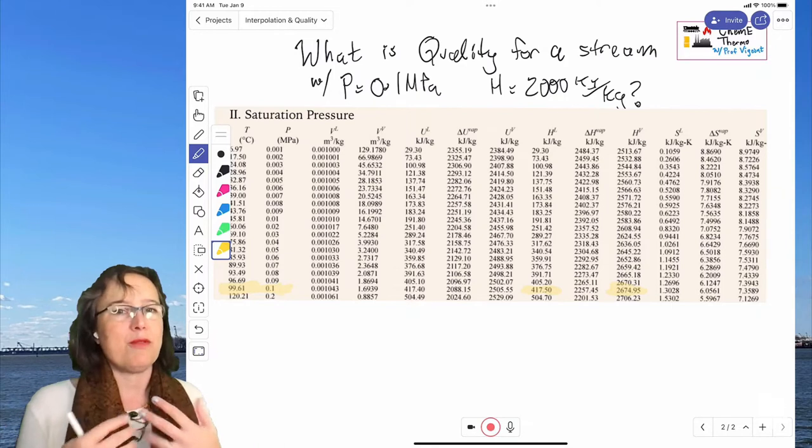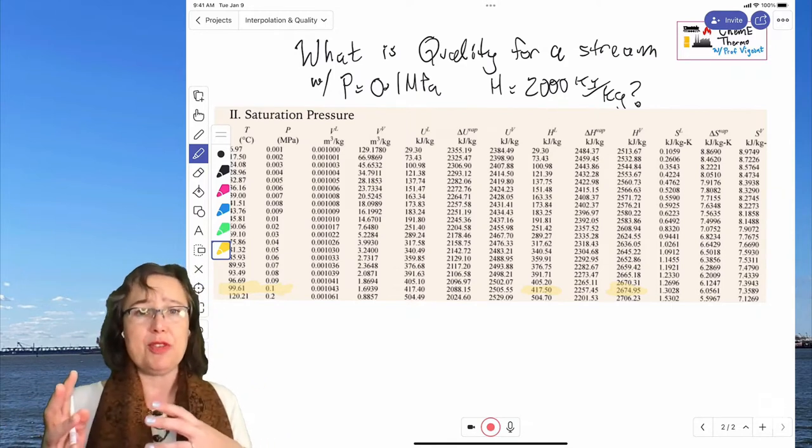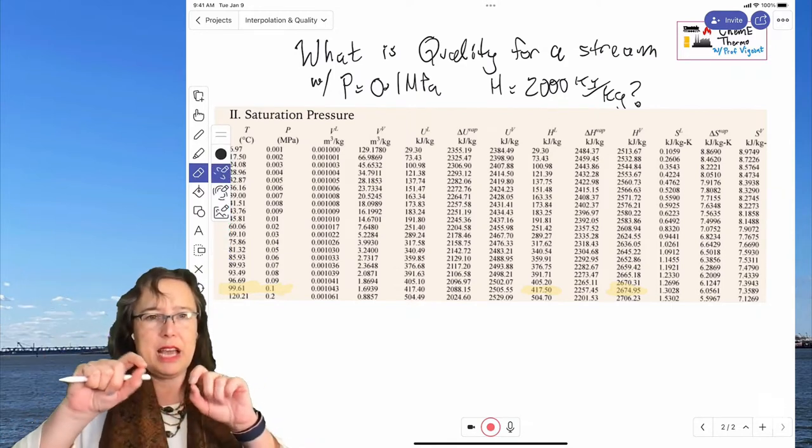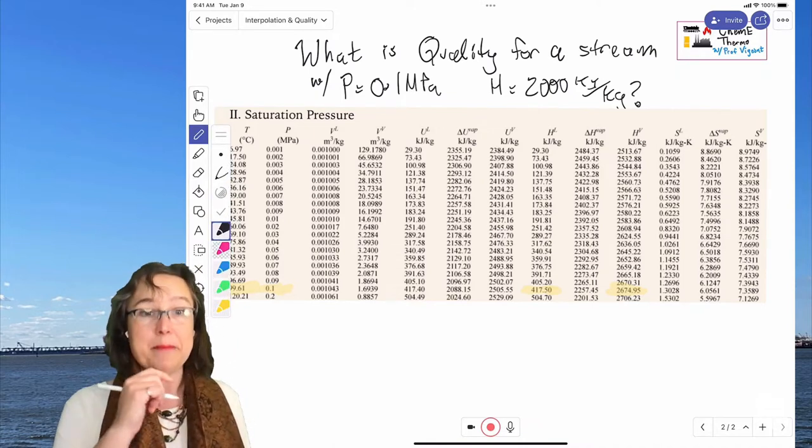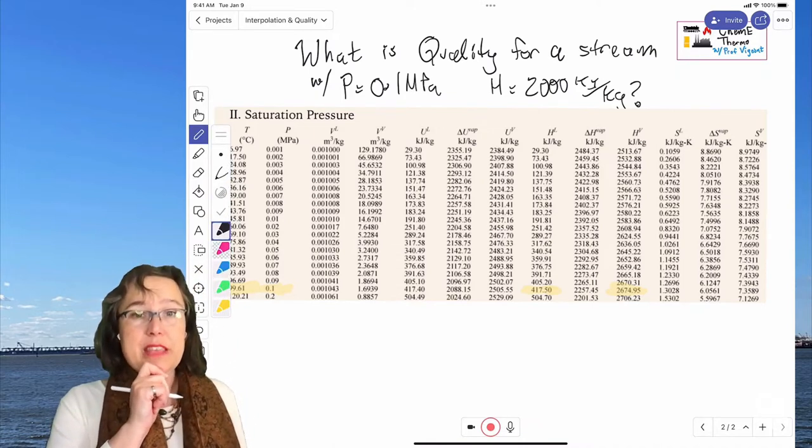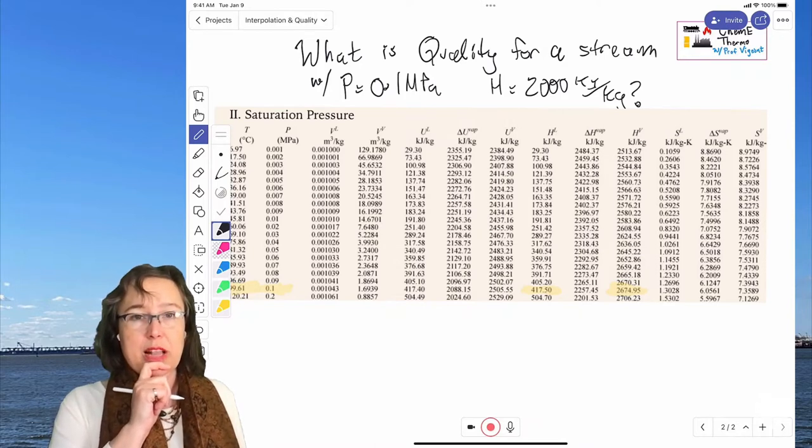So this is an example of why a physical steam table is useful. If we had this online, you couldn't look at these things and really make a determination of that. So how does this work? How do we find the quality?